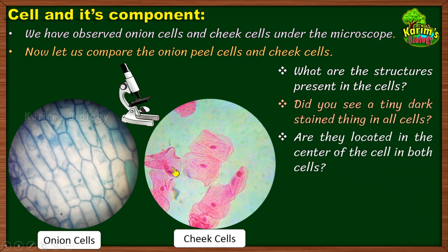Are these tiny dark-stained bodies located in the center of the cell in both onion cells and cheek cells? We have seen the tiny darkly stained structures, but are they exactly located at the center? Look at this cell — yes, they are located at the center, but here this tiny darkly stained body is not exactly at the center but towards the periphery. Here also it is somewhat towards the periphery. In cheek cells, the darkly stained body is almost at the center, but in some cells it is towards a side.